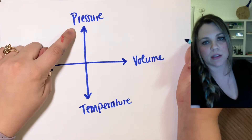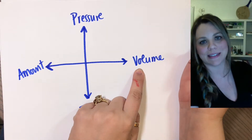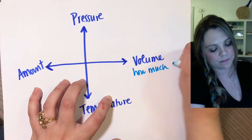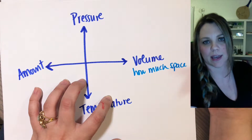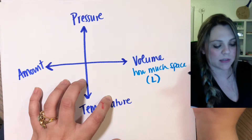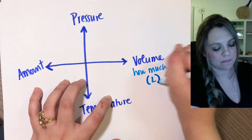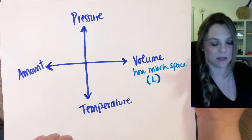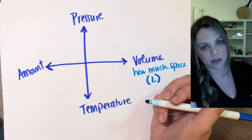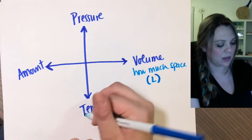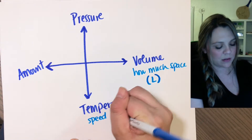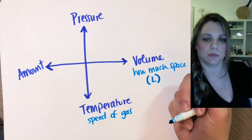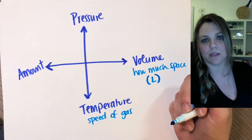Pressure will be the last one we cover. Volume is the easiest — volume is just how much space the gas actually takes up, and we always talk about this in liters. Temperature is actually about how fast the gas is moving. The hotter the temperature, the faster it's moving; the colder the temperature, the slower it's moving.